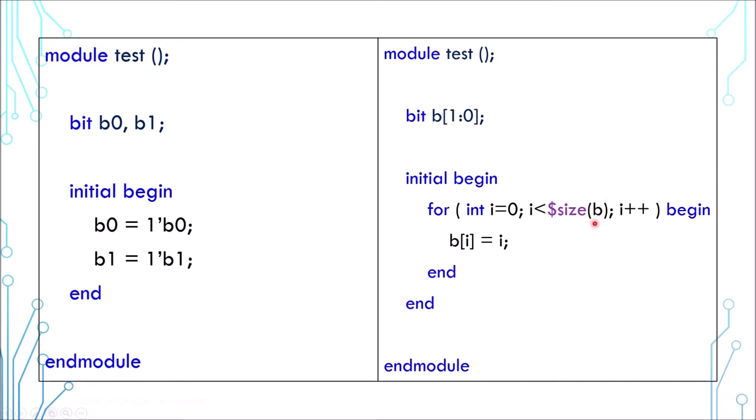Up until now, we have evolved several pieces of code. They all work in the same manner. But this one here is a scalable one. Imagine that you need 10 bits instead of 2 bits. Looking at the code at the left, you will need to add 8 more variables and then you need to modify the initial block accordingly. But looking at the code at the right, you only need to modify the size of the array. Even better if you use parameter on the array, the whole code becomes truly scalable.